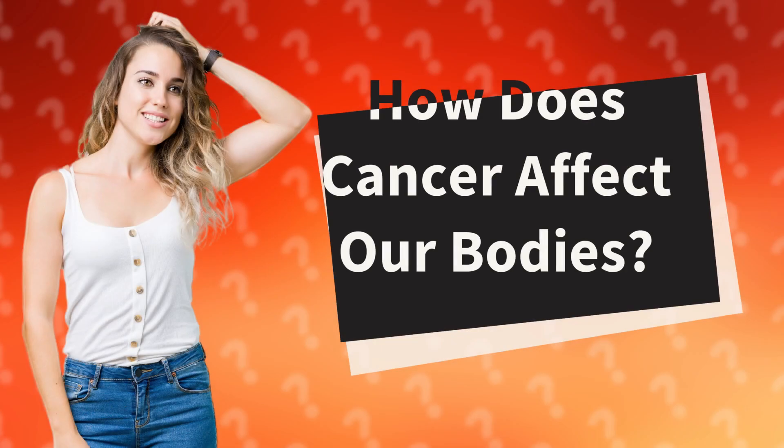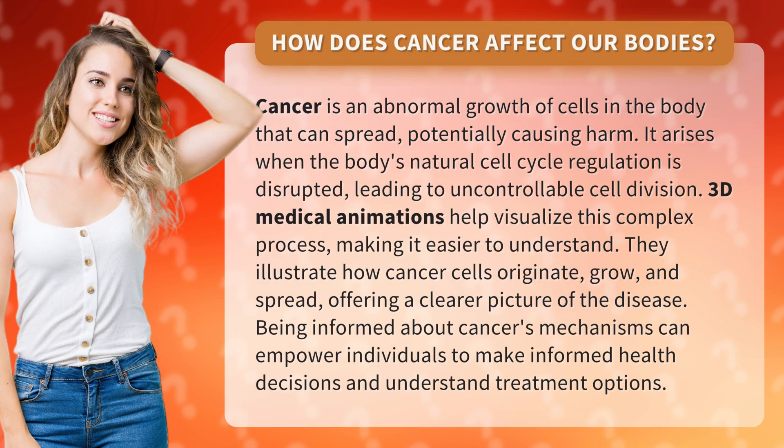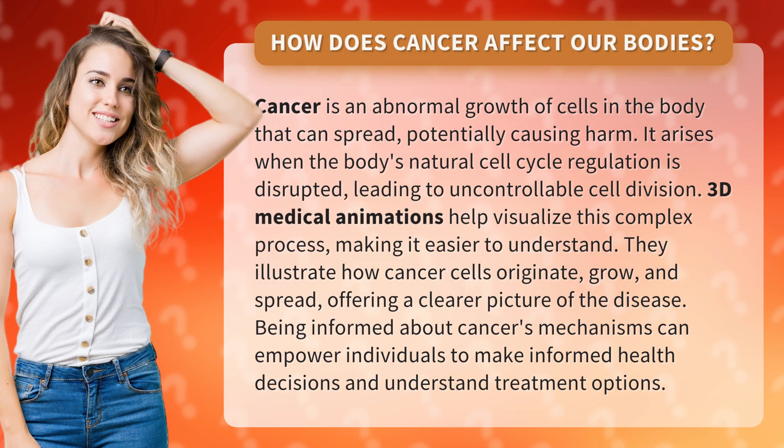How does cancer affect our bodies? Cancer is an abnormal growth of cells in the body that can spread, potentially causing harm. It arises when the body's natural cell cycle regulation is disrupted, leading to uncontrollable cell division.